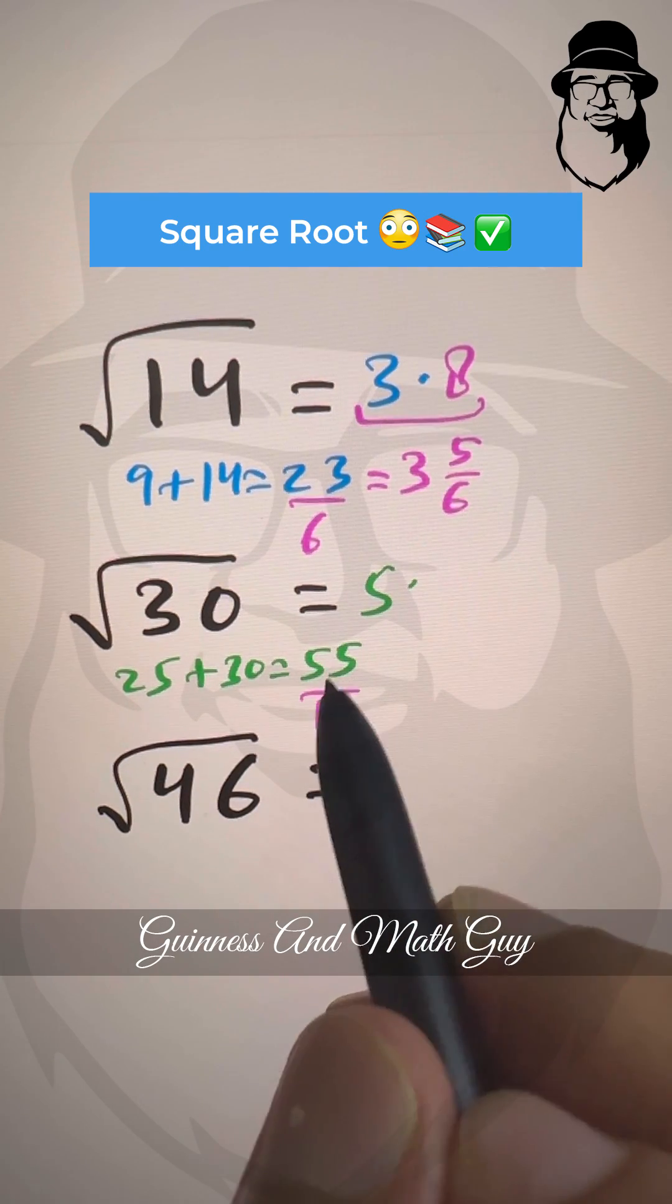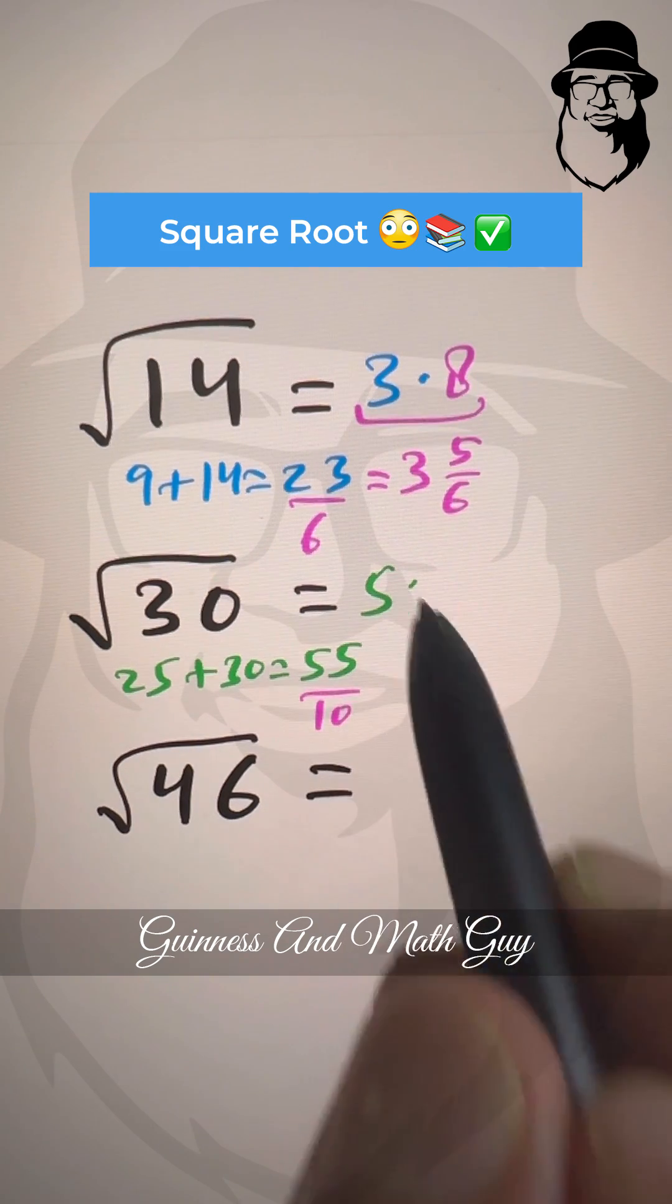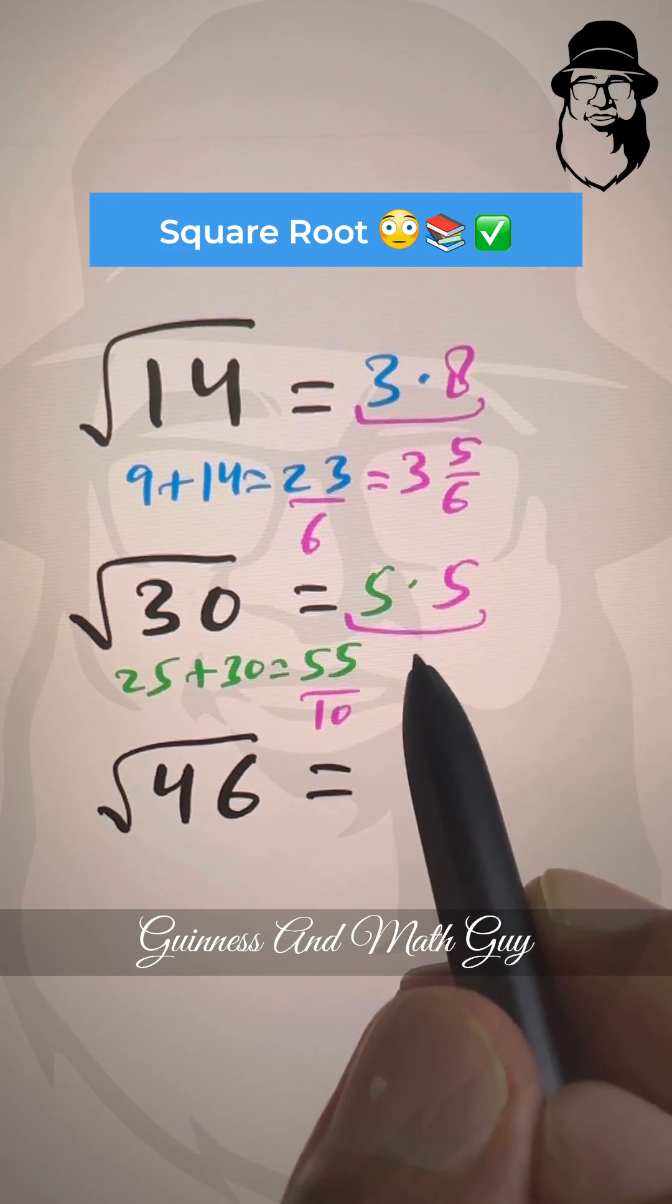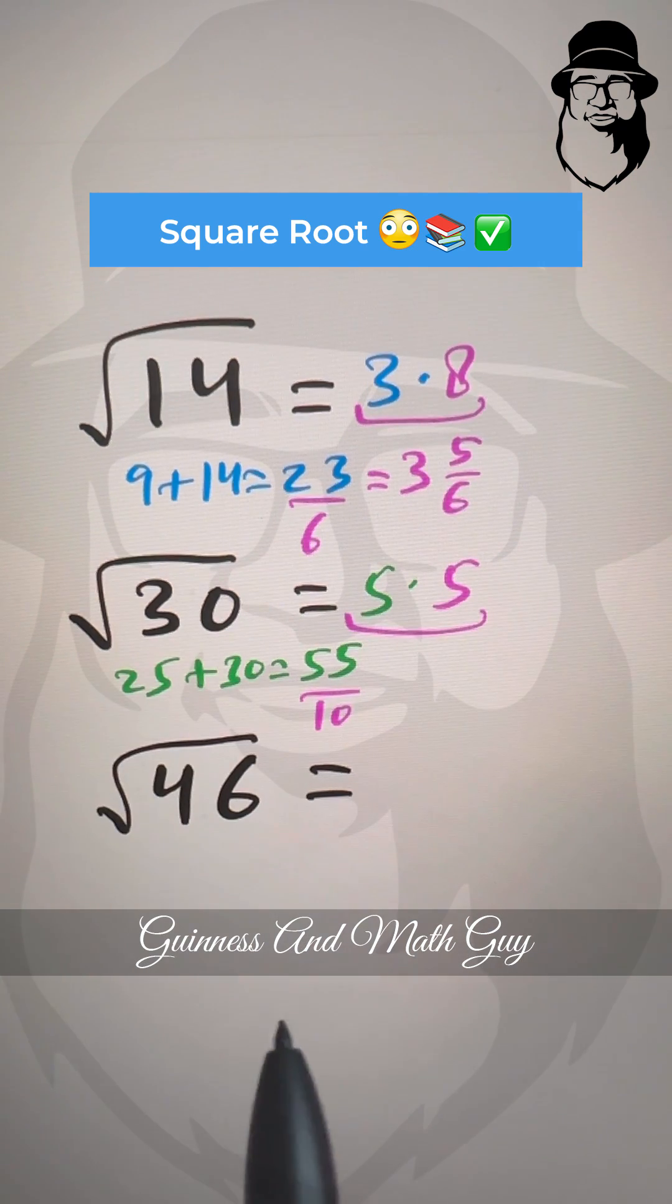And our answer here is 5.5, right? Because divided by 10 will give us 5.5. And that's approximation to one decimal place for square root of 30.